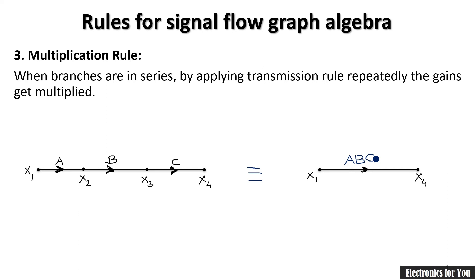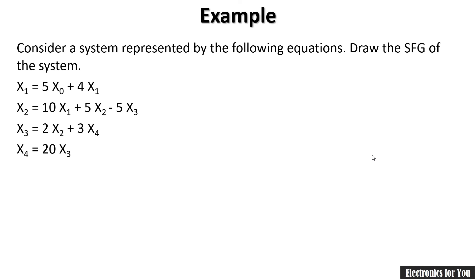Now let us move toward the example. Consider the system represented by the following equations: draw the SFG, signal flow graph of the system. Some equations are given here: x1, x2, x3, and x4, means we are already having some variables as x1, x2, x3, and x4. One more variable is there, that is x0.